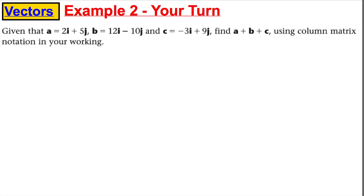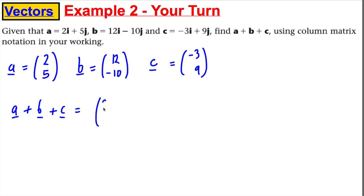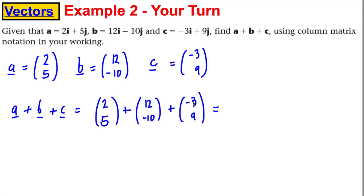Pause the video and have a go at the following. A = 2i + 5j = (2, 5). B = 12i - 10j = (12, -10). C = -3i + 9j = (-3, 9). Find A plus B plus C using column notation. A plus B plus C is (2, 5) + (12, -10) + (-3, 9). 2 + 12 + (-3) = 11. 5 + (-10) + 9 = 4. So the answer is (11, 4), which you could write back as 11i + 4j.